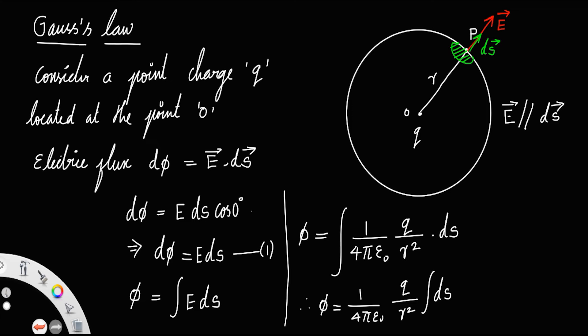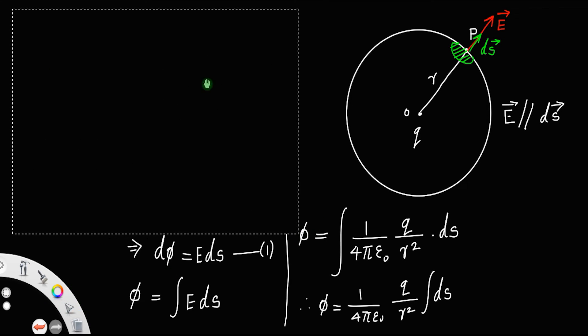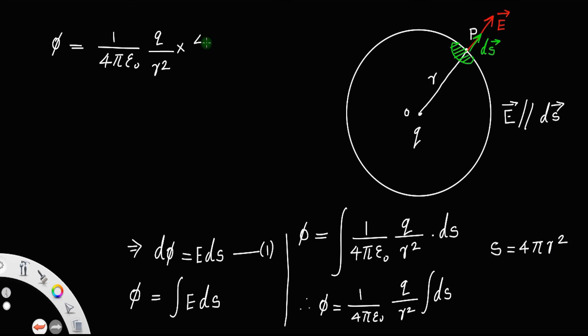This can be simplified as φ equals 1 by 4π ε₀, q divided by R square into integral ds, which means the total surface area s. The total surface area of a sphere is 4π R square. So this times 4π R square. Since integral ds equals s equals 4π R square.